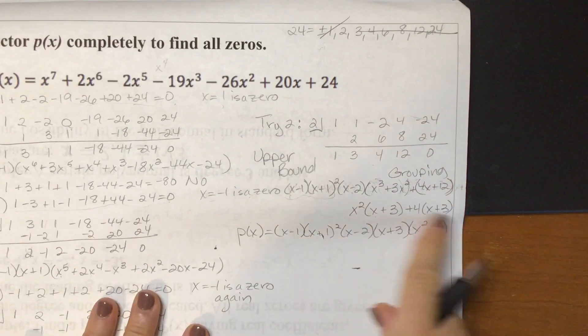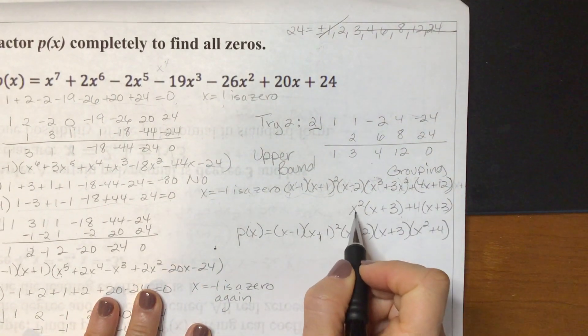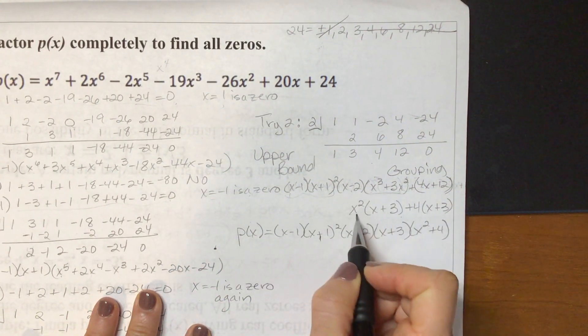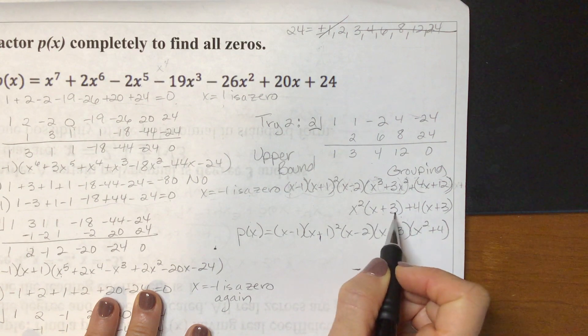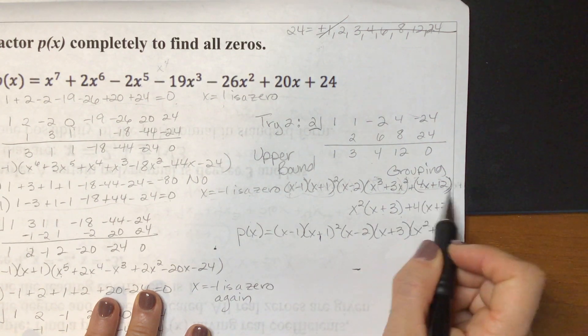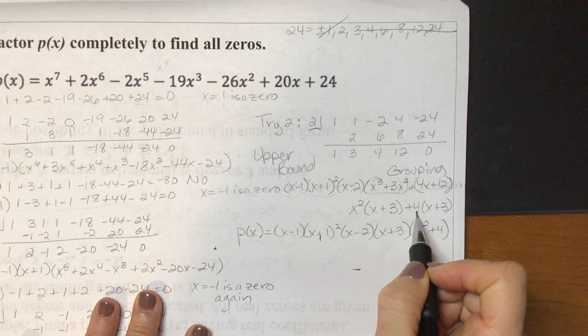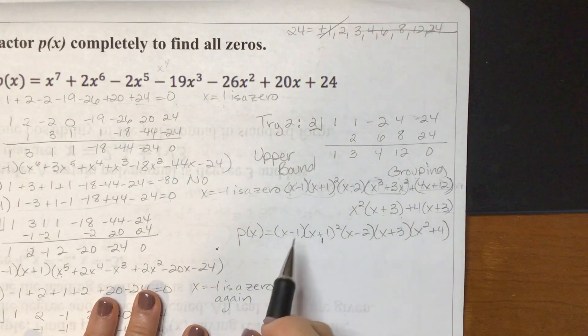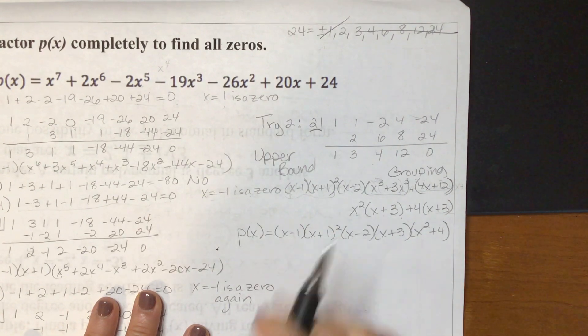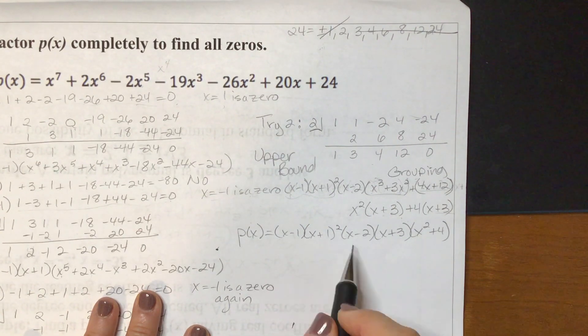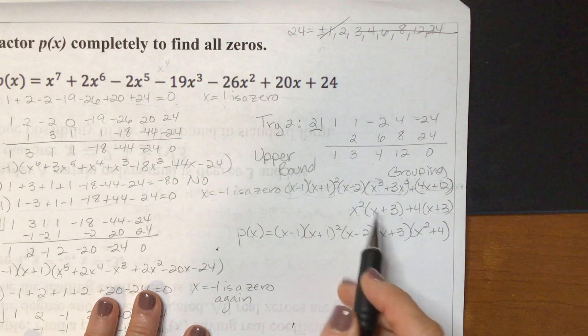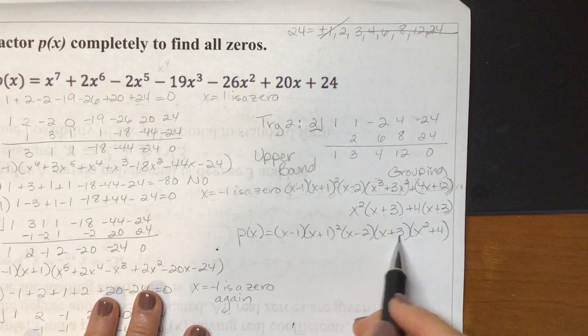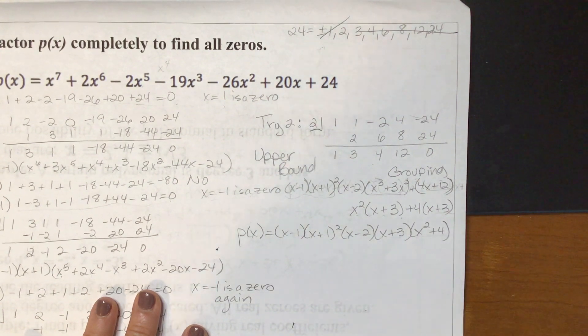And so you can see that my greatest common factor in the first two terms was x squared, which left me x plus 3. And between the last two terms was plus 4, which left me x plus 3. So now I fully factored. Now I had x minus 1 times x plus 1 squared times x minus 2 times my new zero factor of x plus 3. And then what was left is x squared plus 4. And that is not factorable.